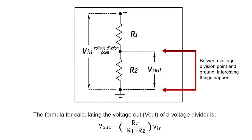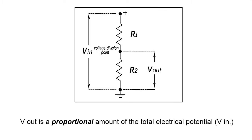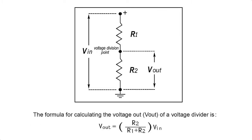The voltage out is what we get if we're measuring from the voltage division point and ground. And between that point and ground, we can calculate how much V out is as V in times R2 over R1 plus R2.